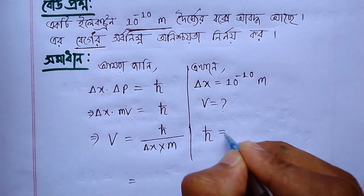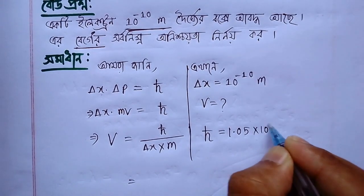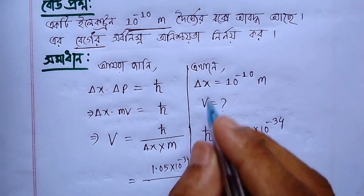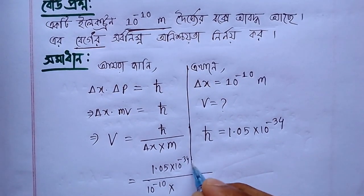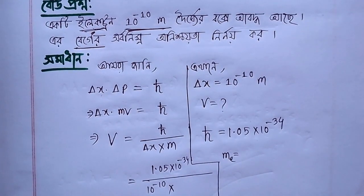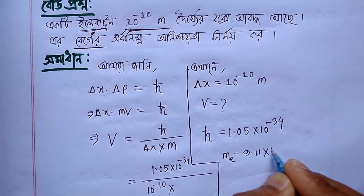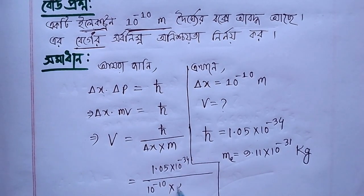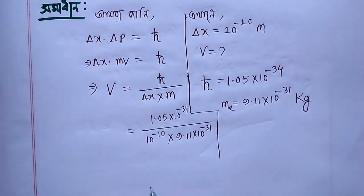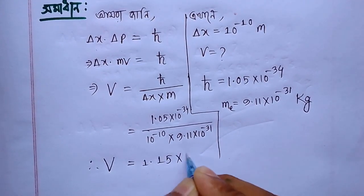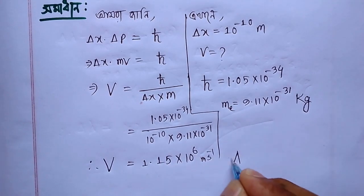This is 1.05 times 10 to the power minus 3, 4. If d-lexer is 10 to the power minus 10, this is m. What is m? This is 1.0 times 10 to the power minus 3, 1. So this is 1.15 times 10 to the power minus 3, 1. So this is the answer.